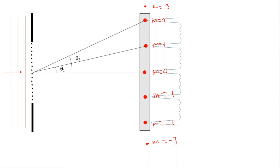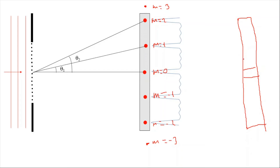In diffraction gratings we concentrate only on the bright points. When we compare this with the double slit experiment, in the double slit we have bands or fringes — a central bright fringe, then a dark fringe, then a first bright fringe, and so on — these are like bands with width. But for the diffraction grating we have only bright spots, and our calculations find the locations or angles of those bright spots.